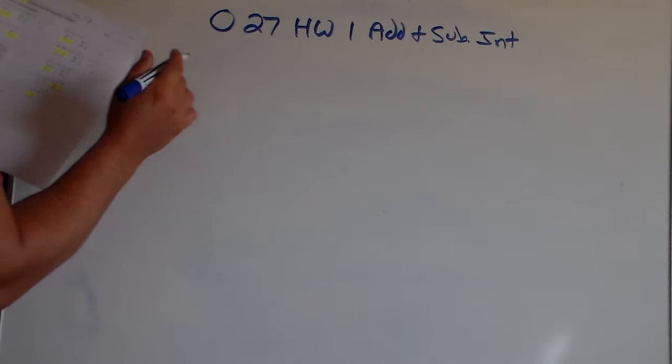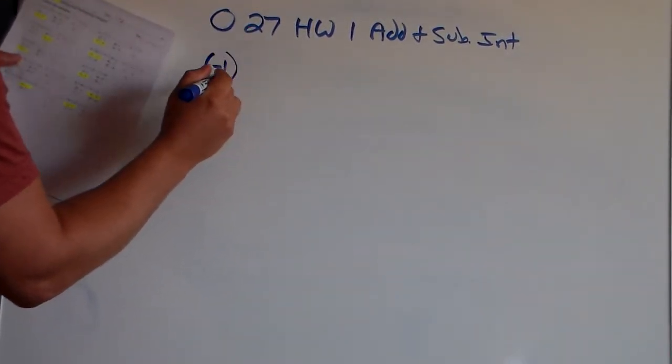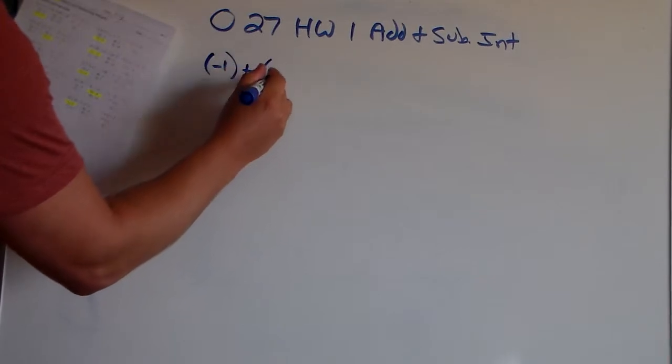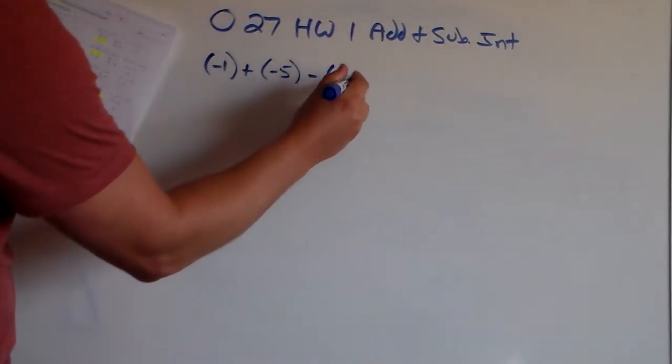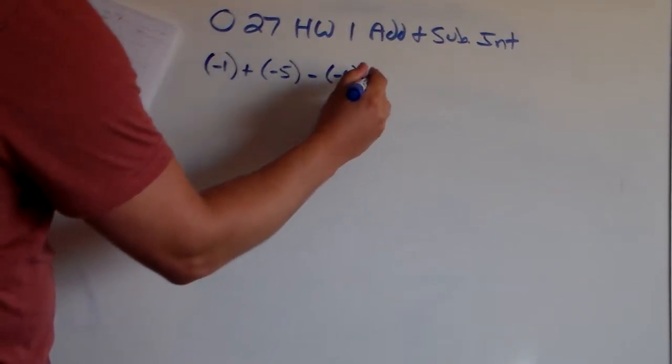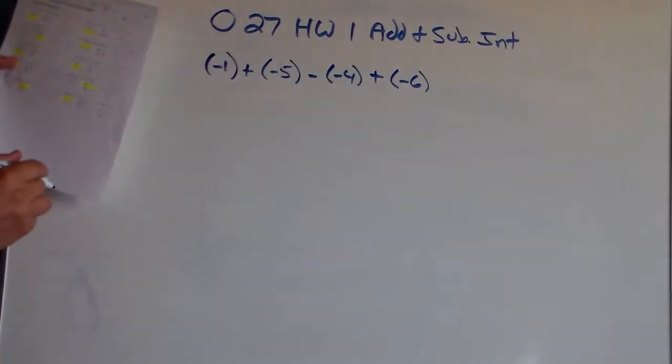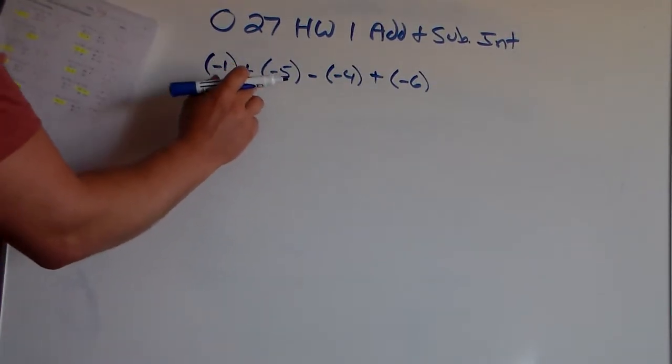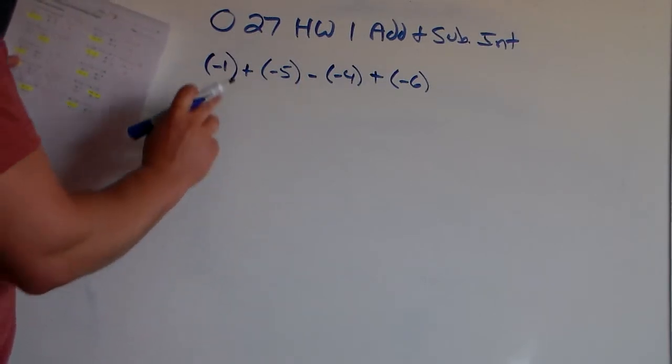All right, so problem number 1. It says 1 plus negative 5 minus a negative 4 plus negative 6. What we've got to do, we have to combine our like terms. We've got to make sure we look at our signs and simplify things all the way down to one particular number.